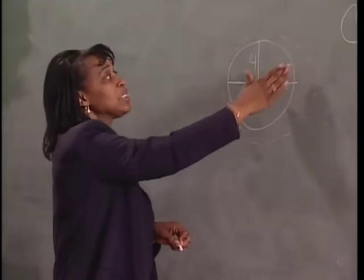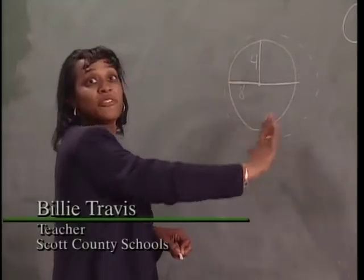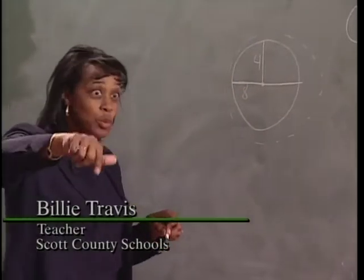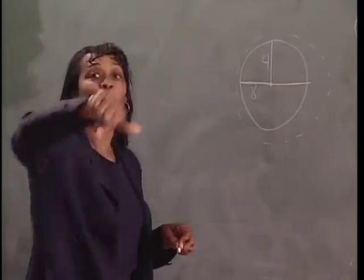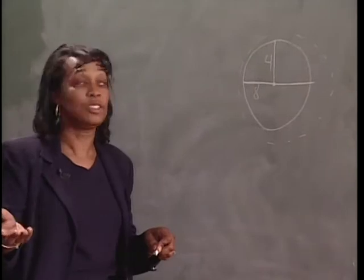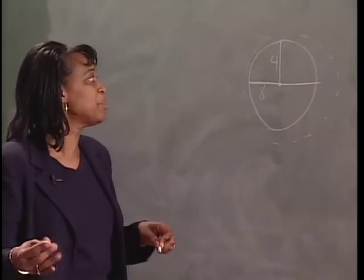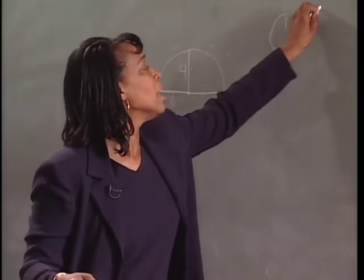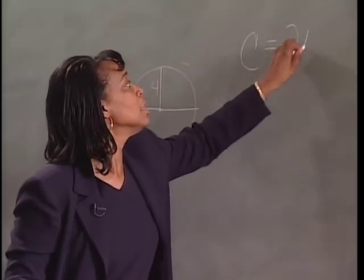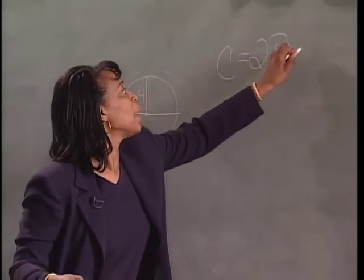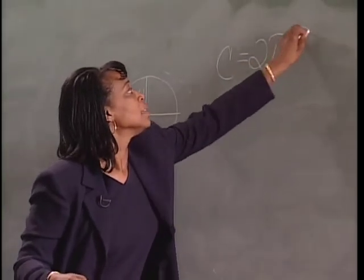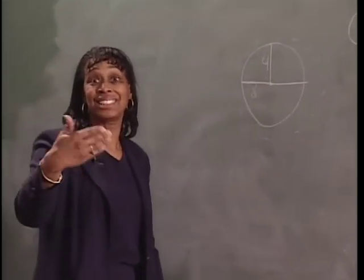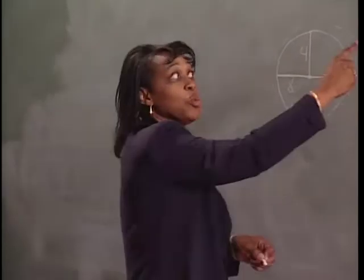So if you wanted to know the circumference of this circle — say you have a circular item and you want to put a border around it — what you have to do is take 2 times pi times r. Sometimes they'll just say pi d, pi times diameter.